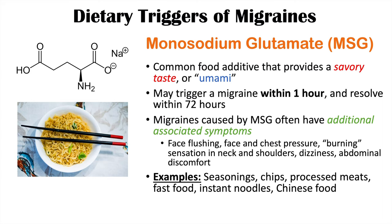MSG can be found in certain seasonings, chips (like Doritos), processed meats, fast food, instant noodles, and Chinese food.